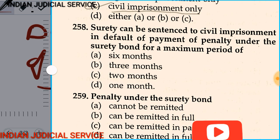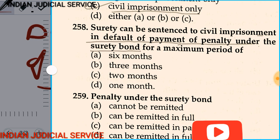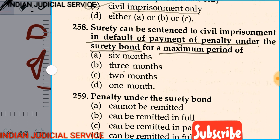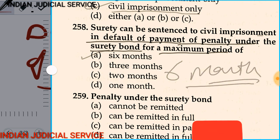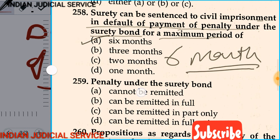Question number 258: The surety can be sentenced to civil imprisonment in default of payment of penalty under the surety bond for a maximum period of — option A: 6 months, option B: 3 months, option C: 2 months, option D: 1 month. The answer is option A: 6 months.